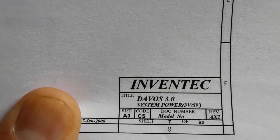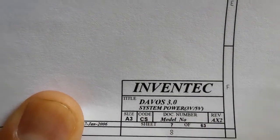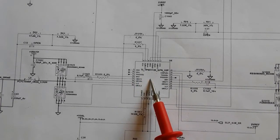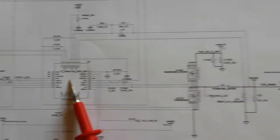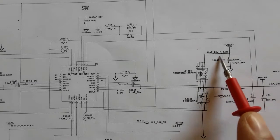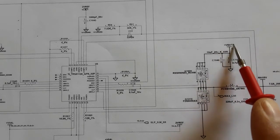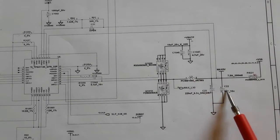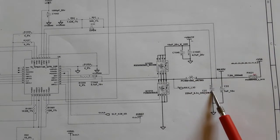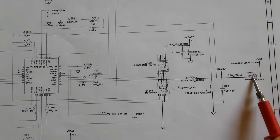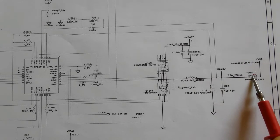This covers the 3V/5V system power. If you don't get 3V or 5V, check the IC, the MOSFETs, the capacitors (ceramic and electrolytic), the presence of VBAT, and the inductor. Use the test point pad to verify whether you have 3V or 5V.